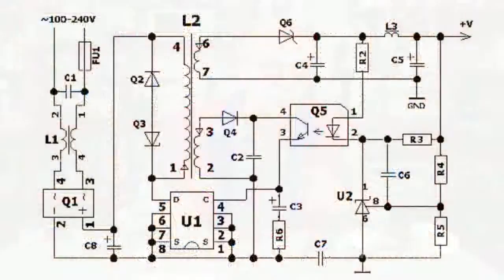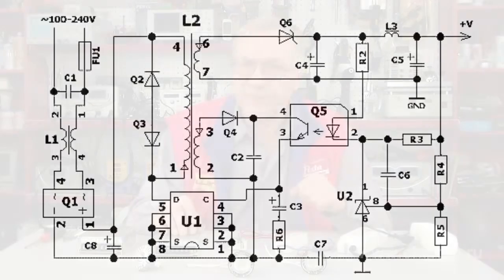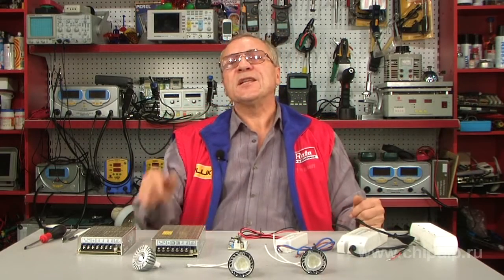LEDs do not like even the slightest surge, so the protection should be triggered automatically and instantly. Power supplies are divided into two groups: DC voltage power supplies and DC current power supplies.